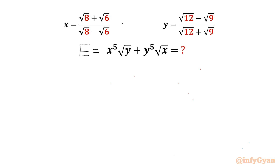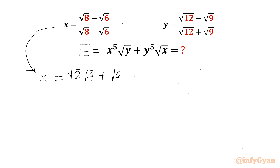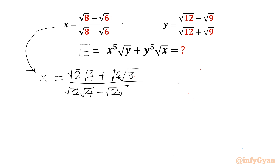Let us call this expression E. Now I will begin with x and simplify it first. Root 8 we can write as root 2 times root 4, plus root 6 we can factor as root 2 times root 3, divided by root 2 times root 4 minus root 2 times root 3.